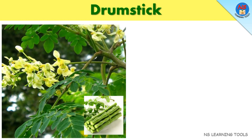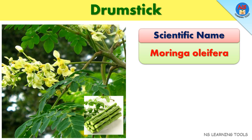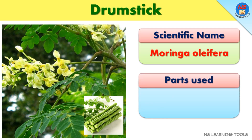Drumstick. Scientific name: Maringa oleifer. Parts used: Leaves, flower, seeds.